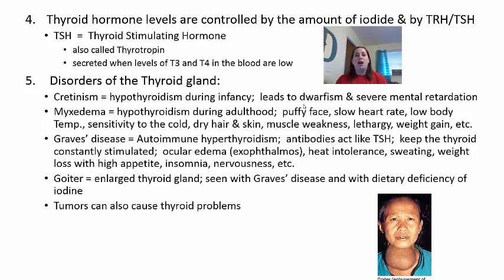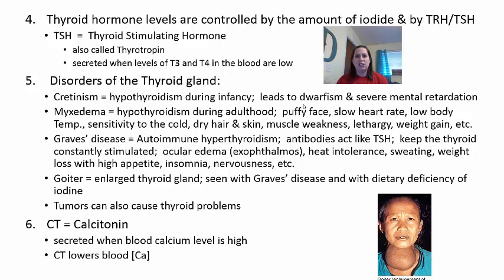The last hormone the thyroid releases is calcitonin, often abbreviated CT. It is secreted when blood calcium levels get too high, and it works to lower those calcium levels. We'll look at the T3/T4 flowchart first, then the calcitonin flowchart.